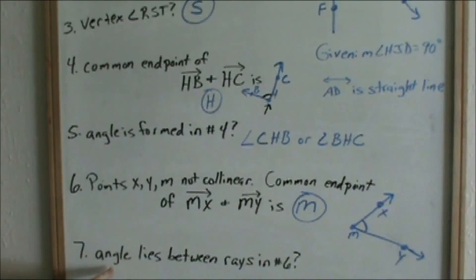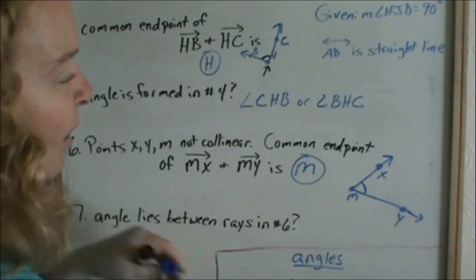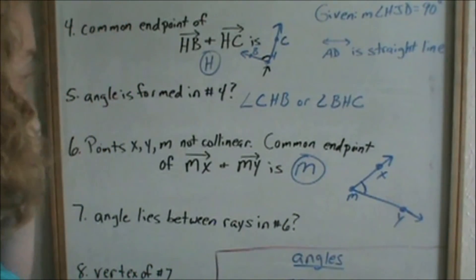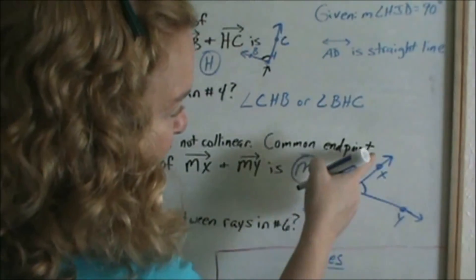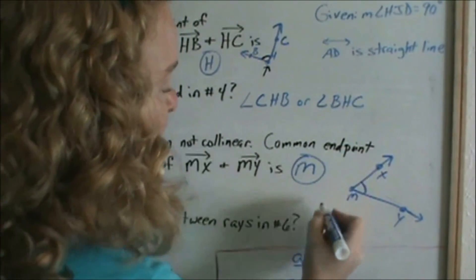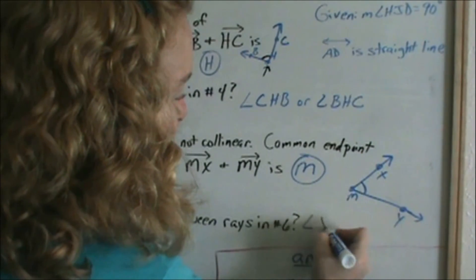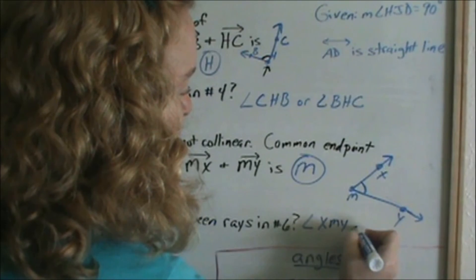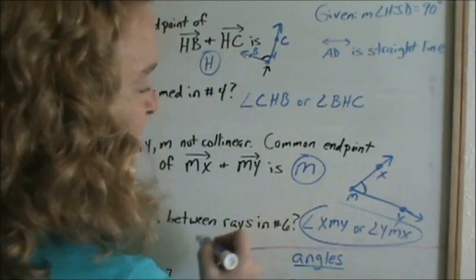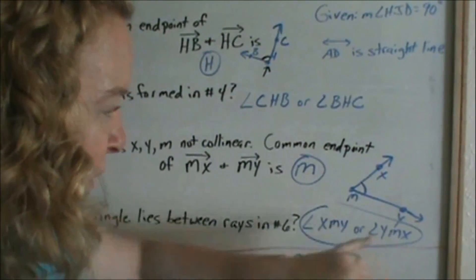Because number seven then says, what angle lies between rays, between the two rays and number six. Well, I just drew ray MX, then I drew ray MY. So now the angle, we call the angle XMY, or YMX. The main thing is that this M is the middle letter. So we can call it angle XMY or angle YMX. So those two rays form an angle, and the angle can be called either one of these.